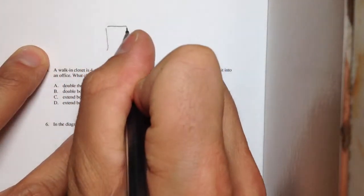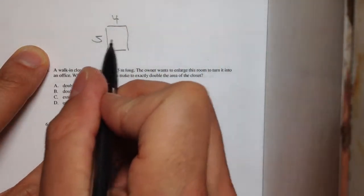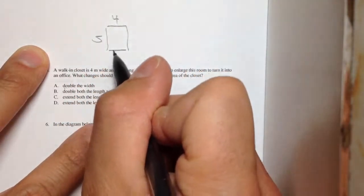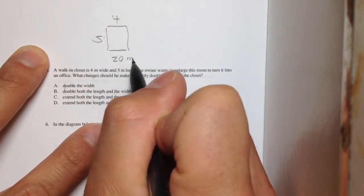So if I have a walk-in closet, and we know that it's 5 by 4 long, and I want to double the area, it means that if I multiply these together, the original area would just be 20 meters squared.